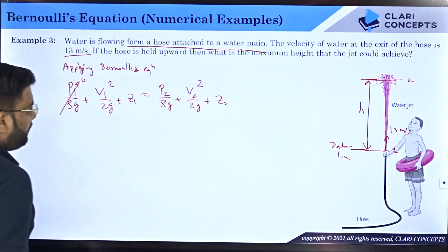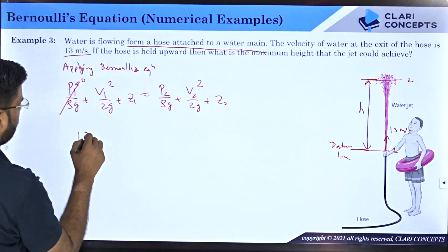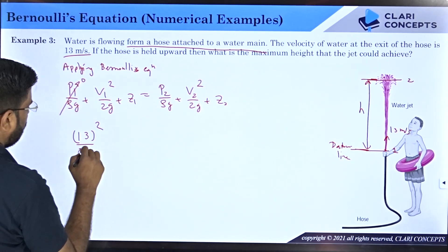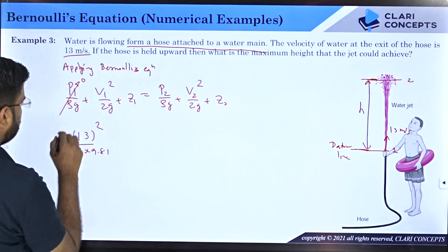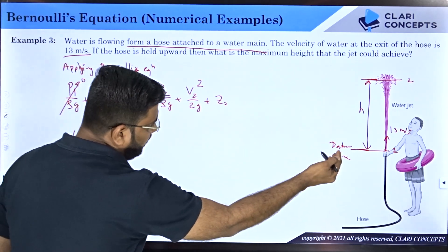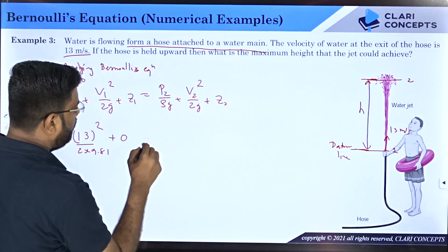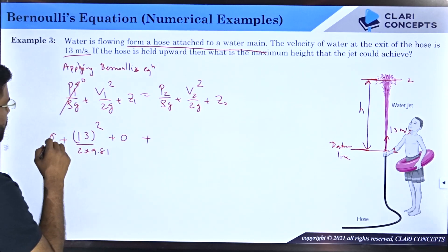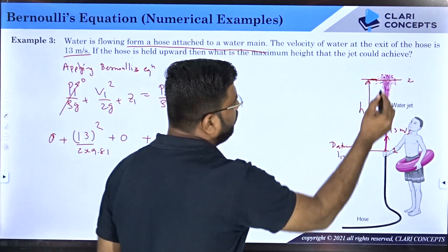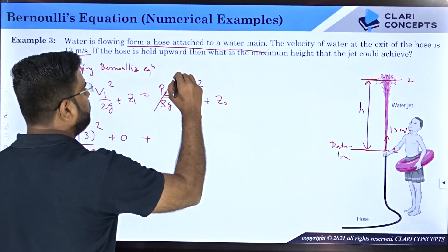What is v1²/(2g)? v1 is given to me as 13, so 13²/(2×9.81). Since the datum is considered at this point only, z1 is zero. What is p2? p2 is pressure at this particular point. Again, point two is also exposed to atmosphere, you can consider this to be zero.